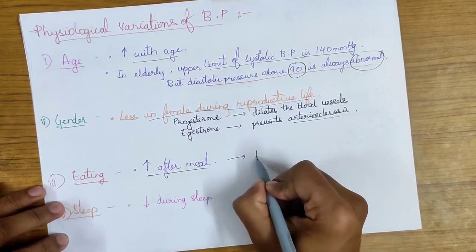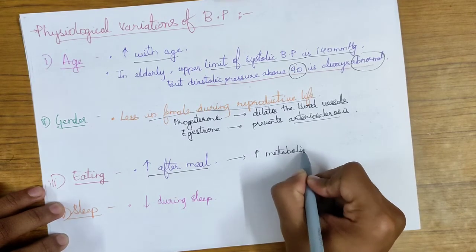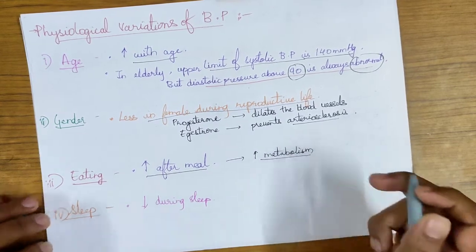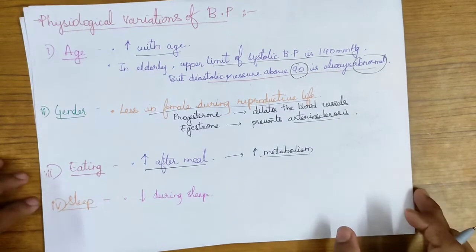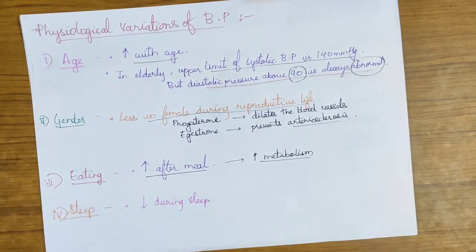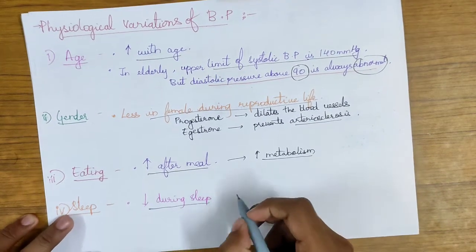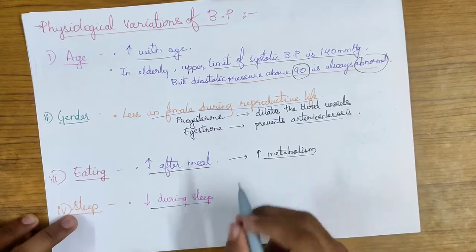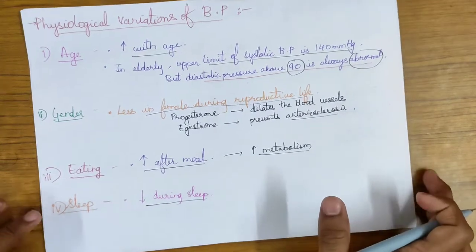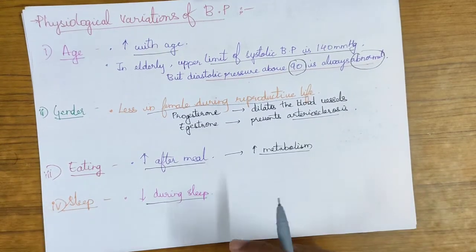The next factor is eating. Blood pressure always increases after a meal due to the increase in metabolism. Since metabolism increases, blood supply also increases to the tissues. The next factor is sleep. Blood pressure decreases during sleep because during sleep the body is at rest and sympathetic influence is reduced, so blood pressure decreases.